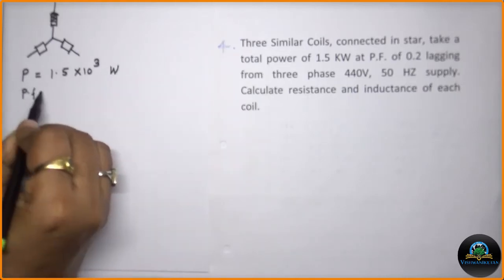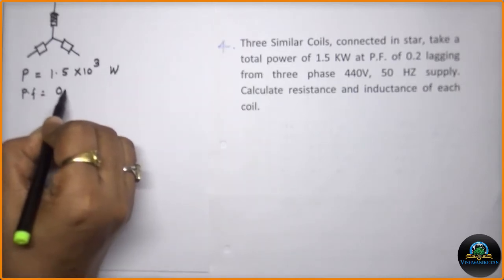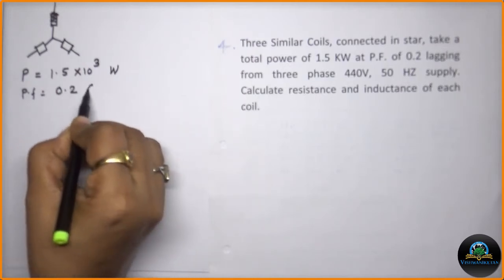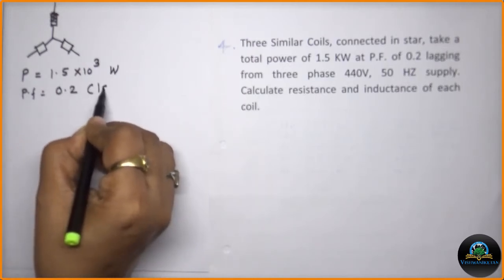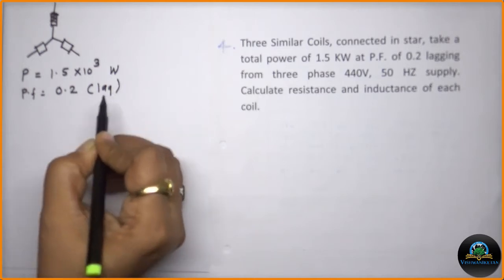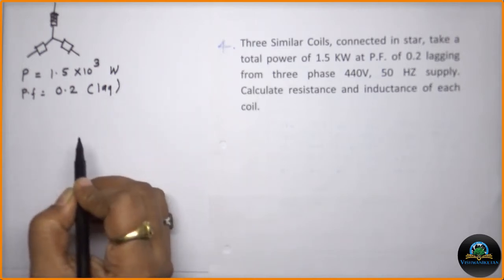Power factor which is given to us is 0.2 lagging. Now as it is mentioned 0.2 lagging, it means that it is nothing but the RL coil or RX circuit which is already mentioned into the problem.